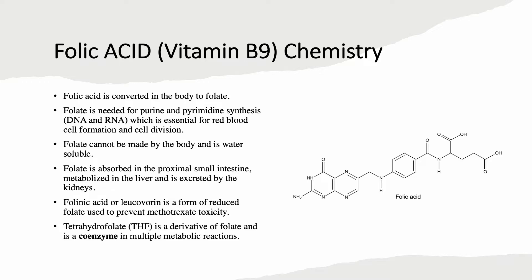Folinic acid is given to people who take methotrexate, a medication for rheumatoid arthritis, and it reduces the toxicity of methotrexate. The coenzyme of folic acid is called tetrahydrofolate, and this coenzyme is essential for the above-mentioned reactions.